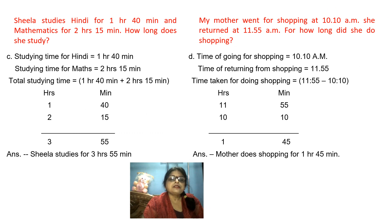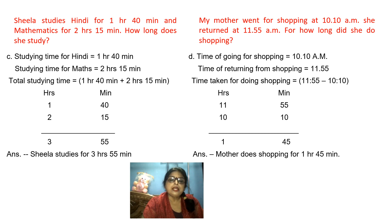My dear students, the next question is: Silla studies Hindi for 1 hour 40 minutes and mathematics for 2 hours 15 minutes. How long does she study? The time taken for Hindi is 1 hour 40 minutes and time taken for maths is 2 hours 15 minutes; you have to find out the total time. Write down the statement: studying time for Hindi — 1 hour 40 minutes; studying time for maths — 2 hours 15 minutes. Make columns for hours and minutes, add both, and you get 3 hours 55 minutes. So in the answers column, write: Silla studies for 3 hours 55 minutes.